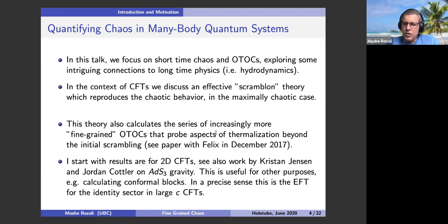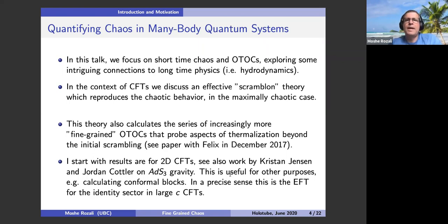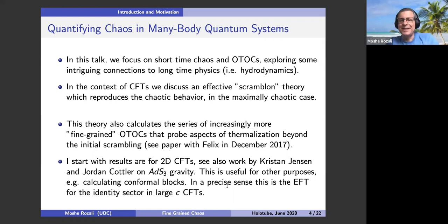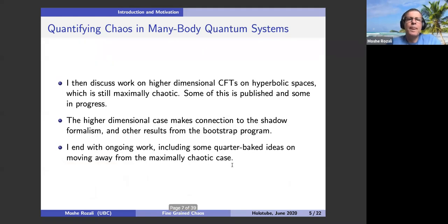I'm going to talk mostly about two-dimensional CFTs. There's also a paper by Kraus and Jordan, and a series of papers on ADS3 gravity which complete the story including nonlinear terms in the action. This is useful to calculate interesting conformal field theory quantities like conformal blocks. One way to understand this theory is that it's an effective field theory to describe the identity sector in large-C conformal field theories.